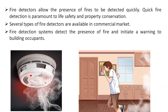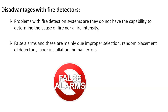Fire detection systems detect the presence of fire and initiate a warning to the building occupants, giving sufficient time to evacuate the building in case of any fire. In addition to the many advantages, fire detectors or fire alarm systems also have disadvantages. They cannot identify the cause of the fire nor the fire intensity.